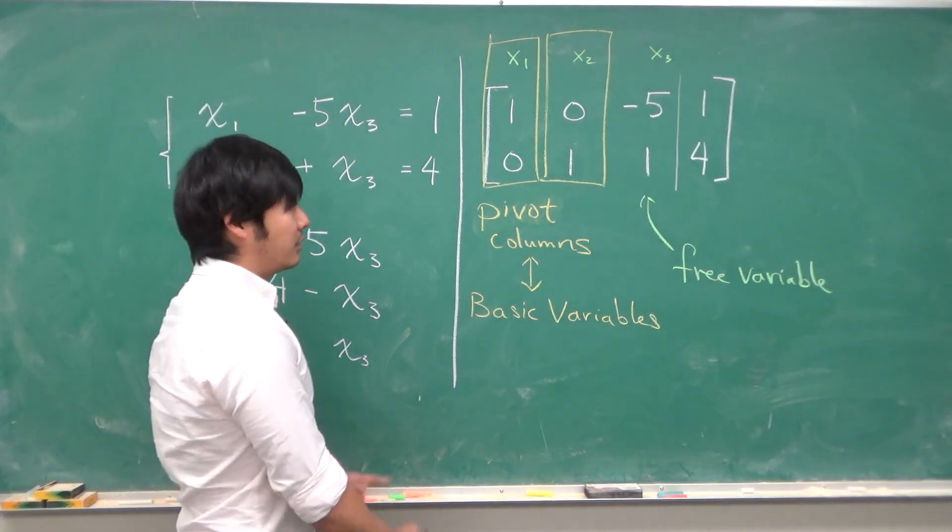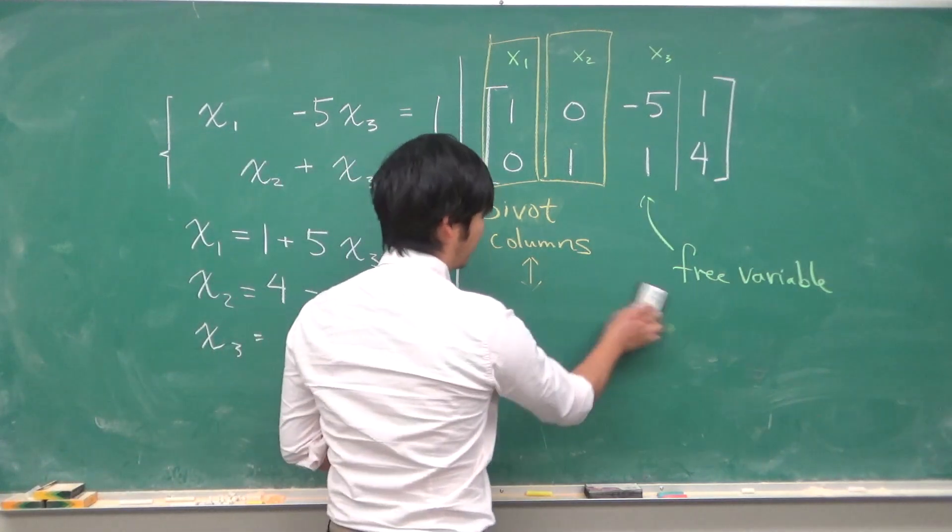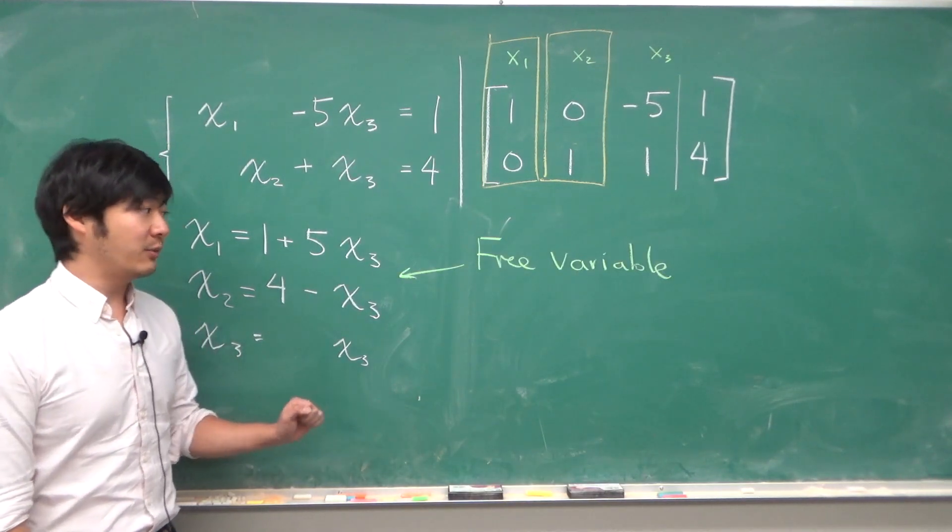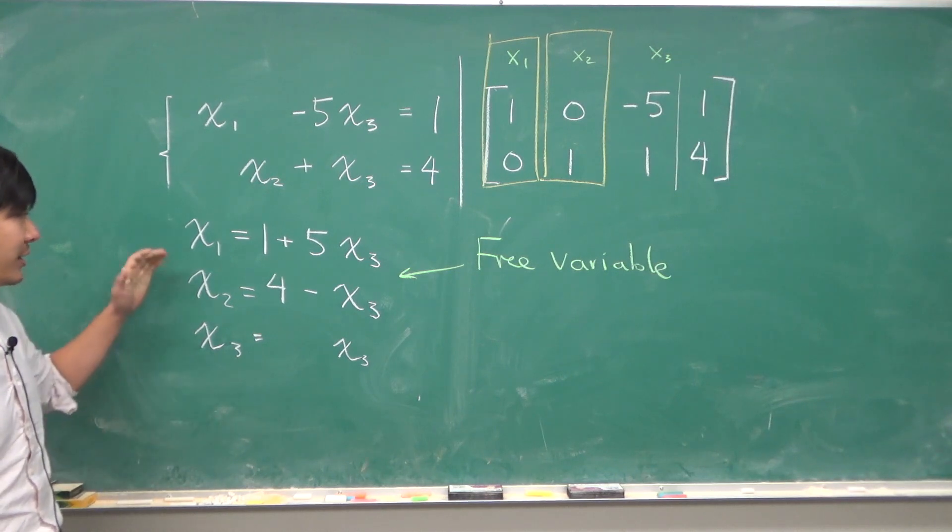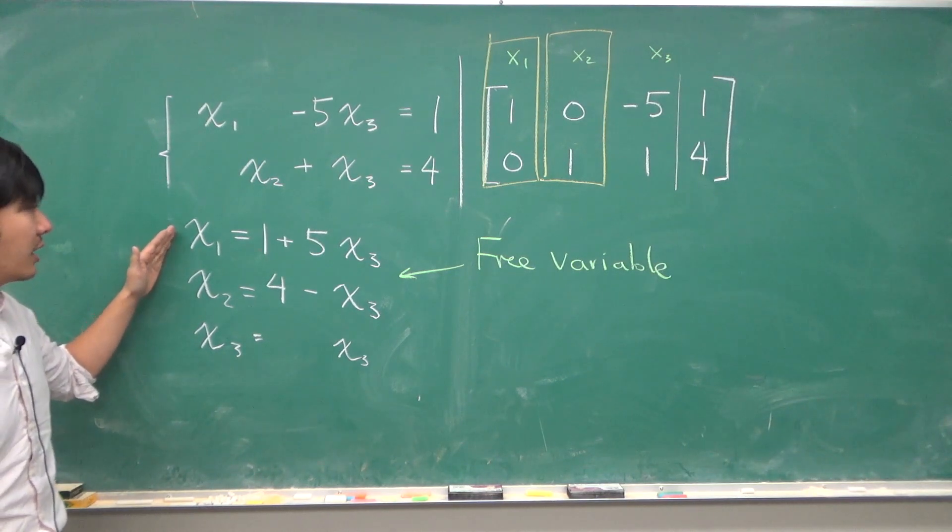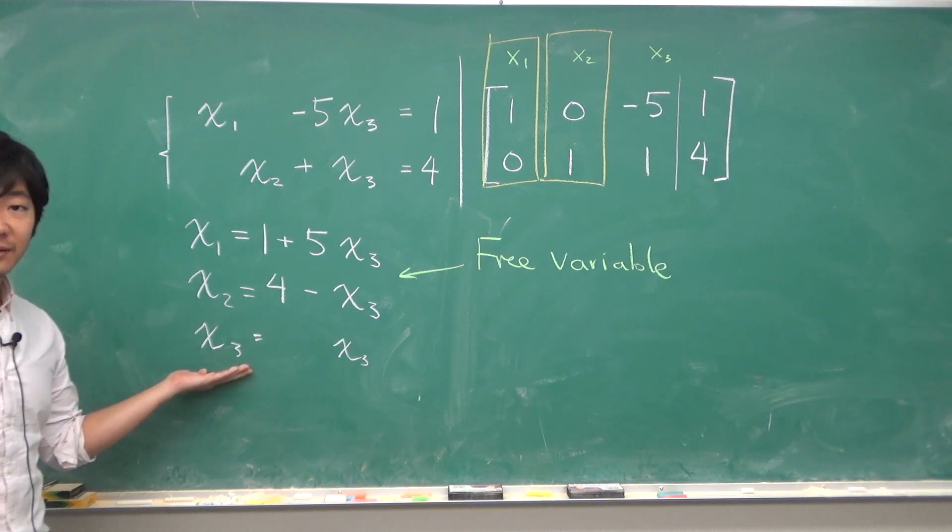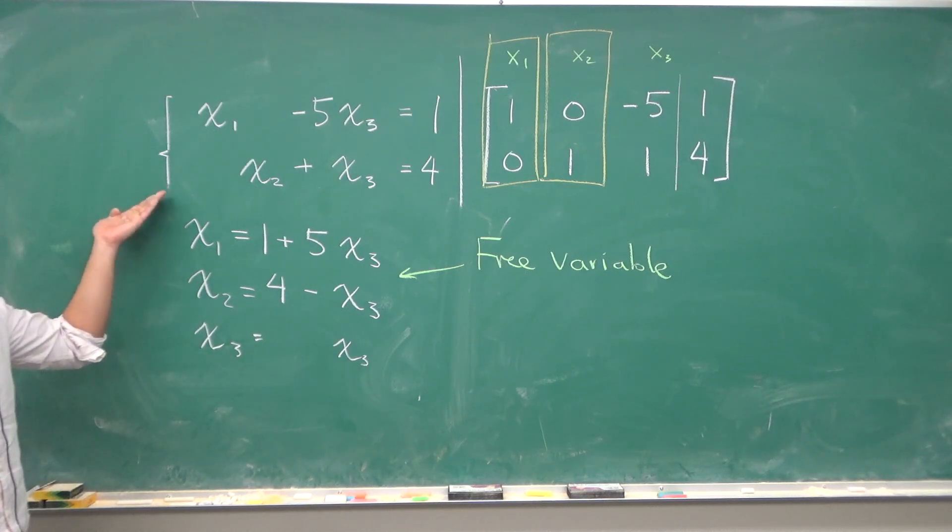When this happens, we can write down the solution as follows. The fact that x3 is a free variable tells us that we should solve our equations in terms of the free variable, and this would describe a set of solutions to this linear equation.